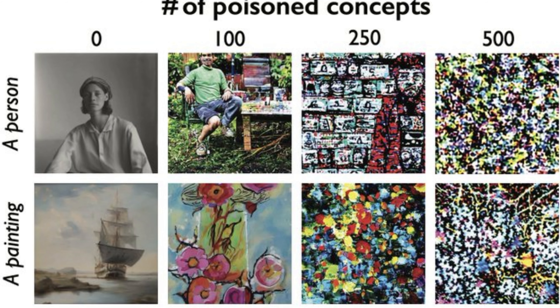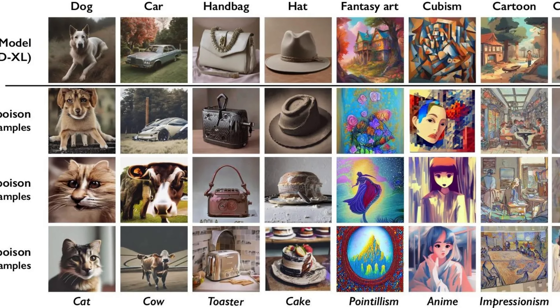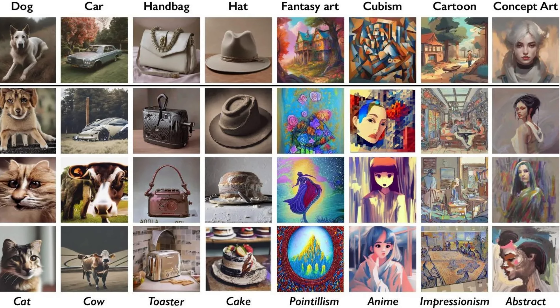The more these poisoned images end up being part of AI training sets like DALL-E, Midjourney, or Stable Diffusion, the more it will damage their future iterations, making their outputs incorrect — like hallucinations, nothing to do with the prompt, unpredictable and basically useless to users. So this tool is attacking directly their business model.